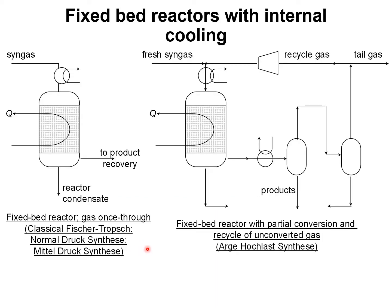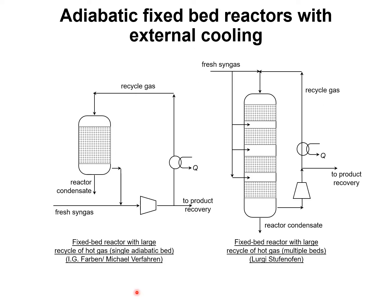The Fischer-Tropsch synthesis can be carried out in fixed bed reactors with internal cooling, and these fixed bed reactors can be operated in a once-through mode or with recycle of the unconverted syngas back to the fixed bed. Fixed bed reactors could also be operated adiabatically with a large recycle of hot gas and external cooling. We could have a single bed or multi-stage bed as shown here on the right.